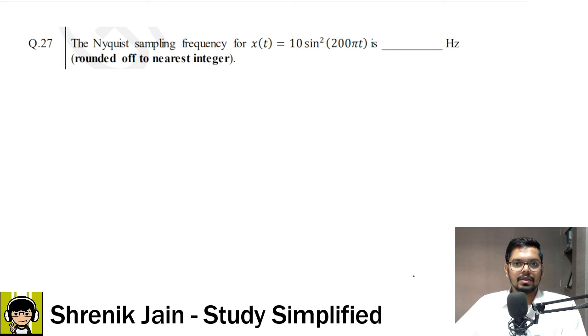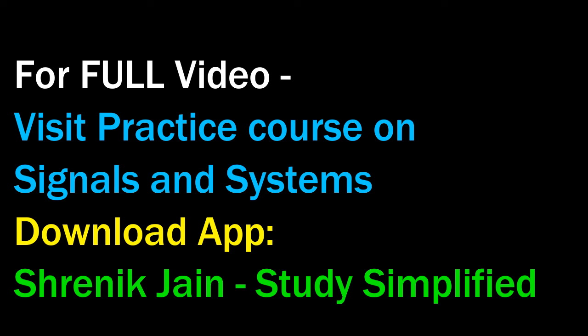The Nyquist sampling frequency for X of T is 10 sin squared 200 pi T is dash.